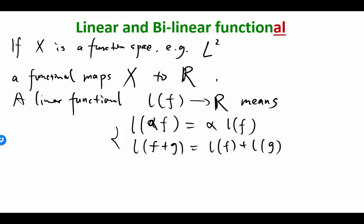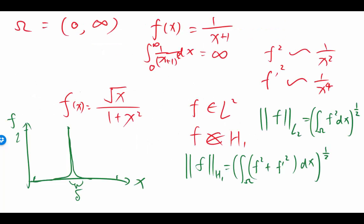For examples: if we are in the L2 space, the norm of a function is a functional, right? The norm of a function, as we defined on the last slide, is a functional, because if you give me a function, I give you a number. But is this norm a linear functional? No.